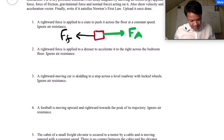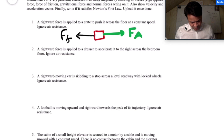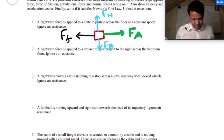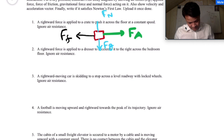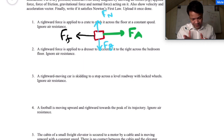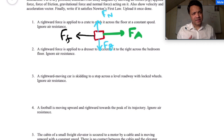That means F-A and F-F balance out. Don't forget to put the normal force and the gravitational force — they are equal in magnitude. Using Newton's First Law, you will see that F-N is equal in magnitude with F-G but opposite in direction. So at the y-direction, net force is zero.